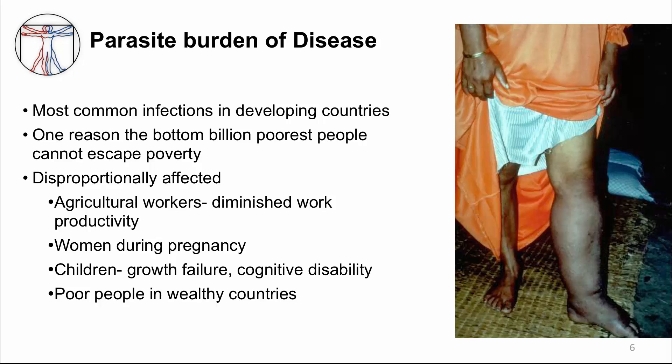In the United States, parasite infections are not as common compared to developing countries. In fact, parasite infections are the most common type of infection in developing countries. This may be in part because of their insufficient public health infrastructure, which can lead to problems with even getting clean water. The high incidence of parasite infections in developing countries is not only a health problem, but also an economic problem. Experts postulate that it's one of the reasons that the bottom billion poorest people can't escape poverty.